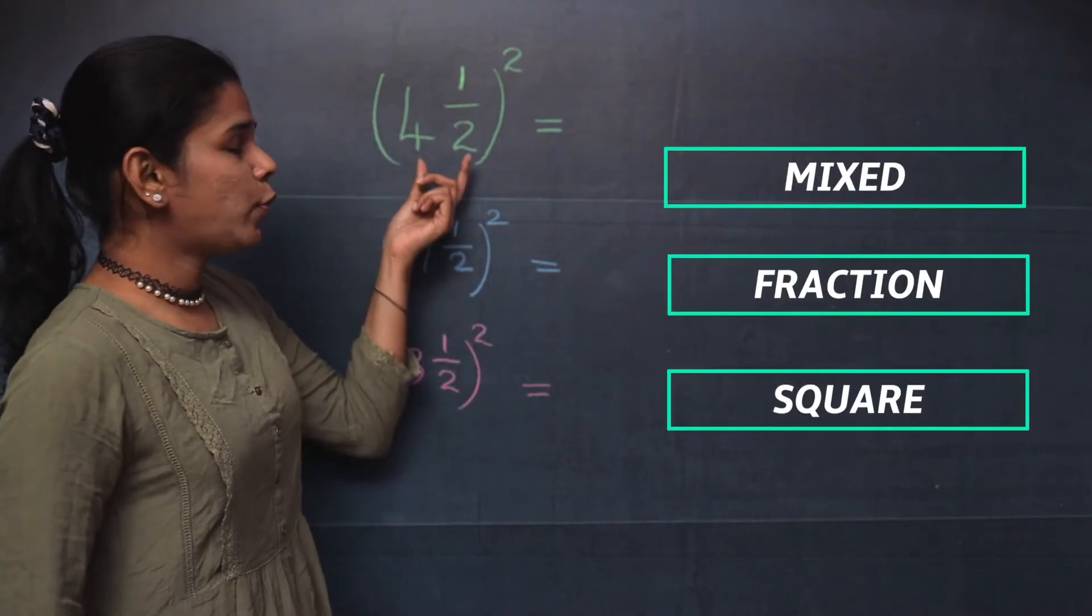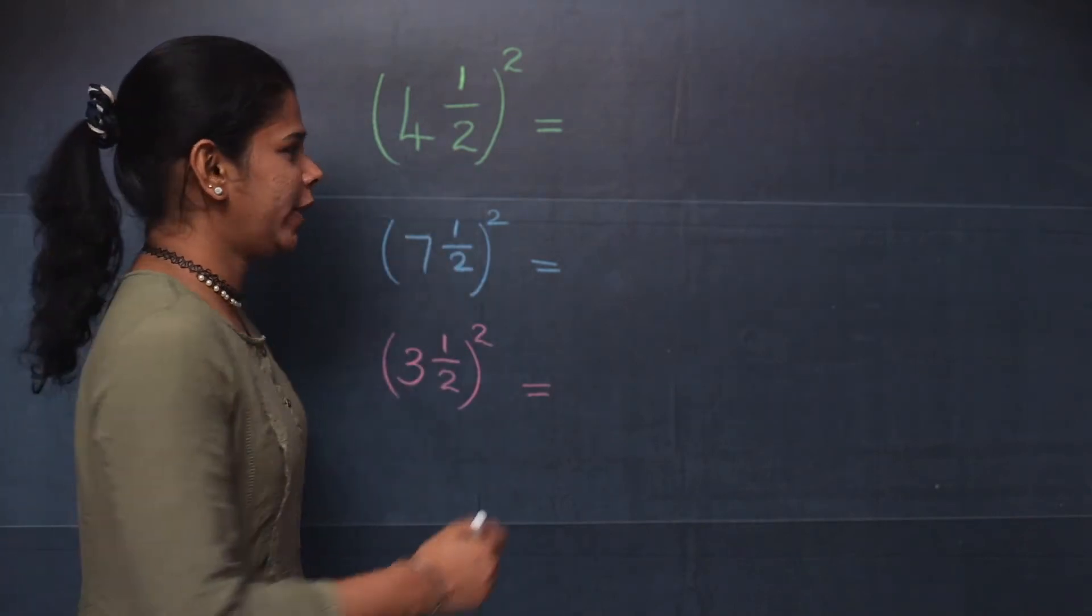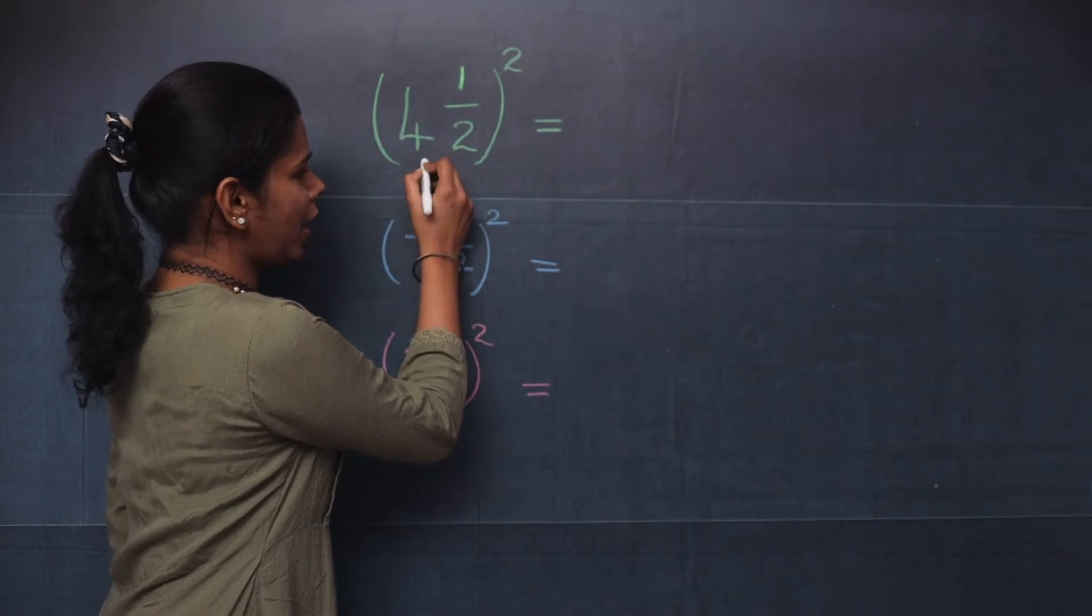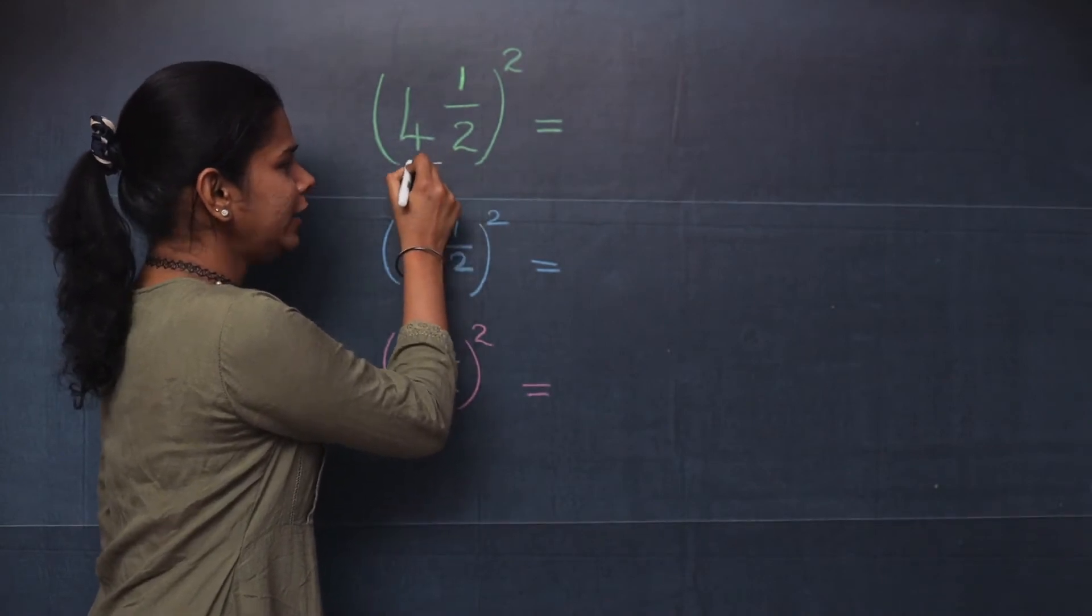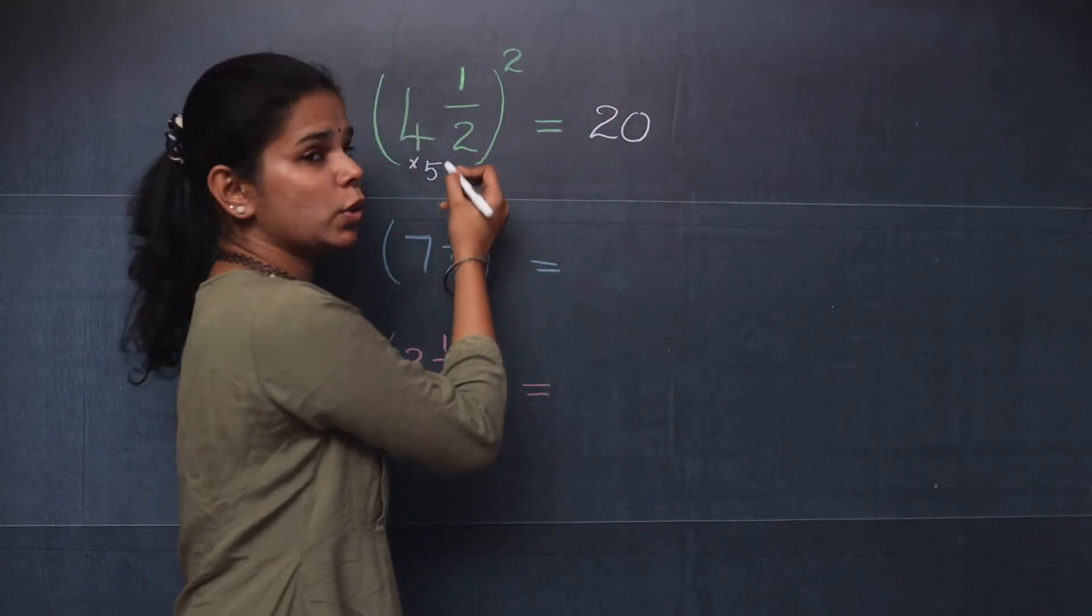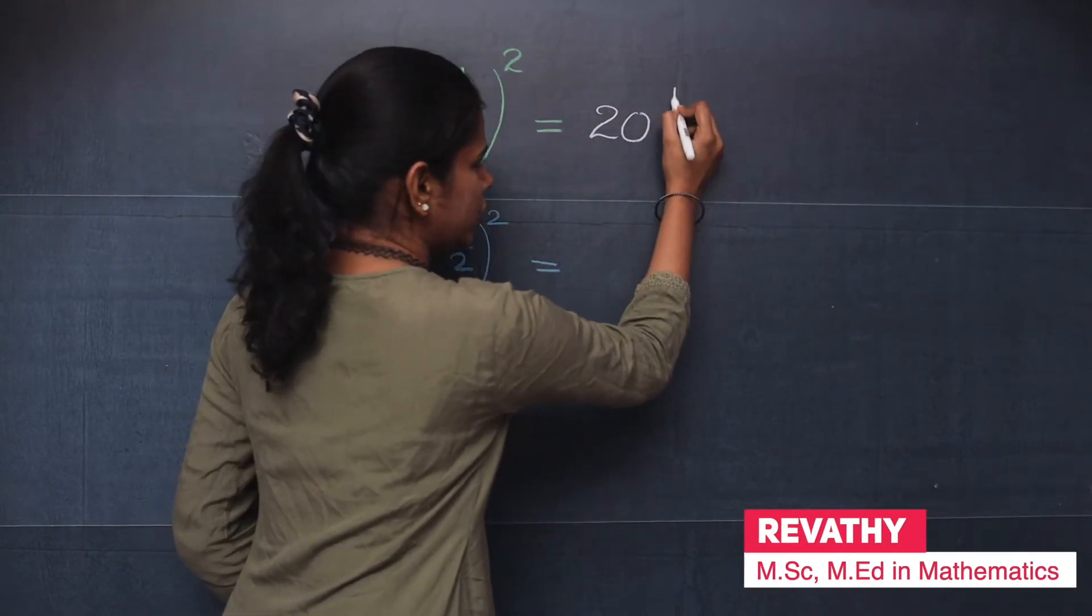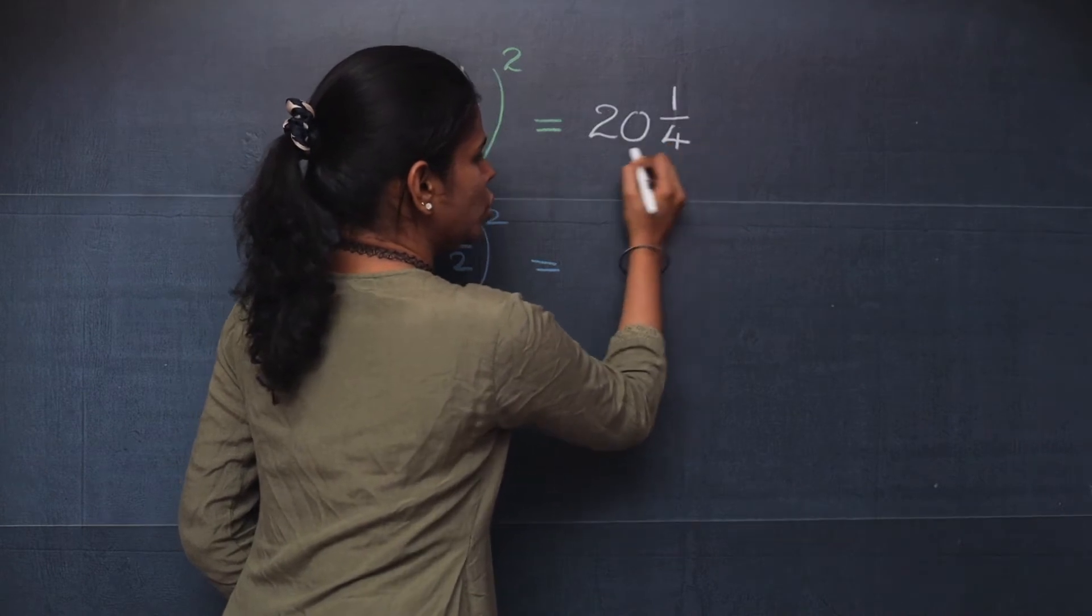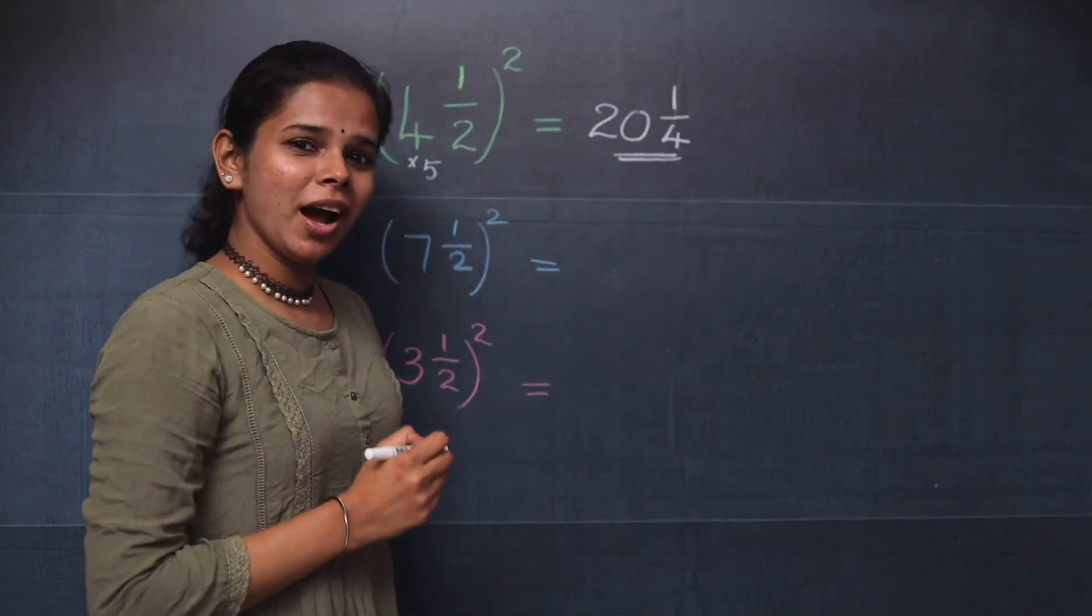Moving on to the first one, 4 1 by 2 the whole square. You will take the next number after 4, that is 5, and then you will multiply 4 and 5, you will get 20. And you will take the square of 1 by 2, so it is 1 by 4. So 20 1 by 4 is your answer.